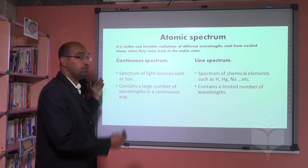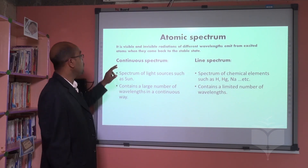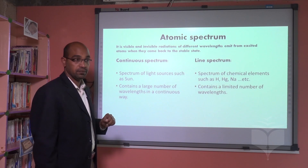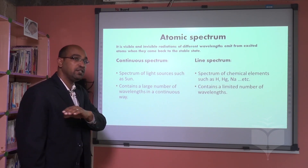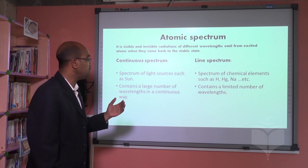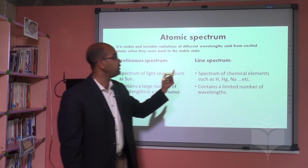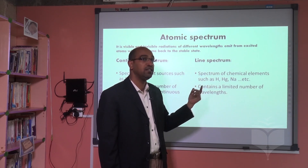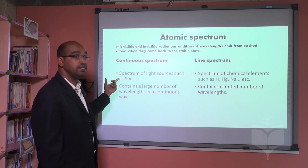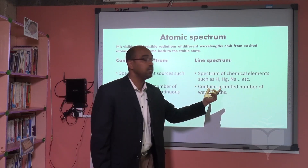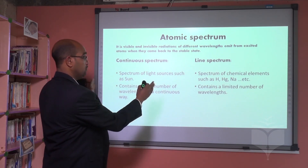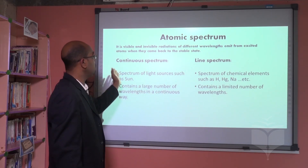Comparing the two types again: continuous spectrum is given by sources of light like the sun, which emits all radiations in a continuous way with nothing missing. Line spectrum, on the other hand, gives only a limited number of radiations and requires excited chemical elements as its source. The difference between continuous and line spectrum is very clear.